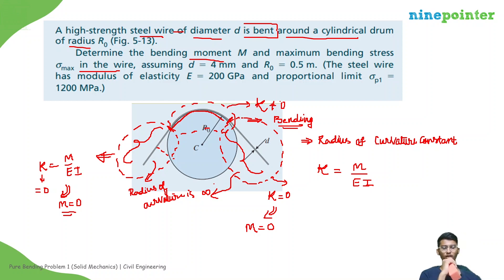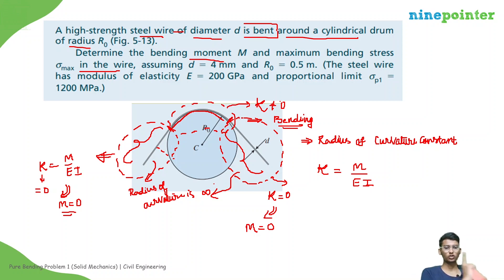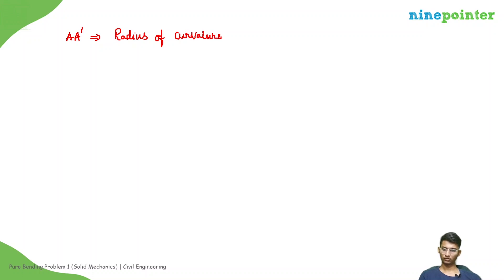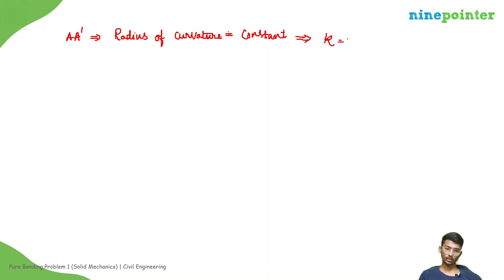But in the bent region around the drum, kappa is non-zero, meaning the curvature is non-zero and we have a non-zero value of bending moment. Furthermore, the radius of curvature is constant in this region, which means constant curvature, which means the bending moment value is constant. Let this region be from A to A'. In this region, kappa is constant and equals M divided by EI.